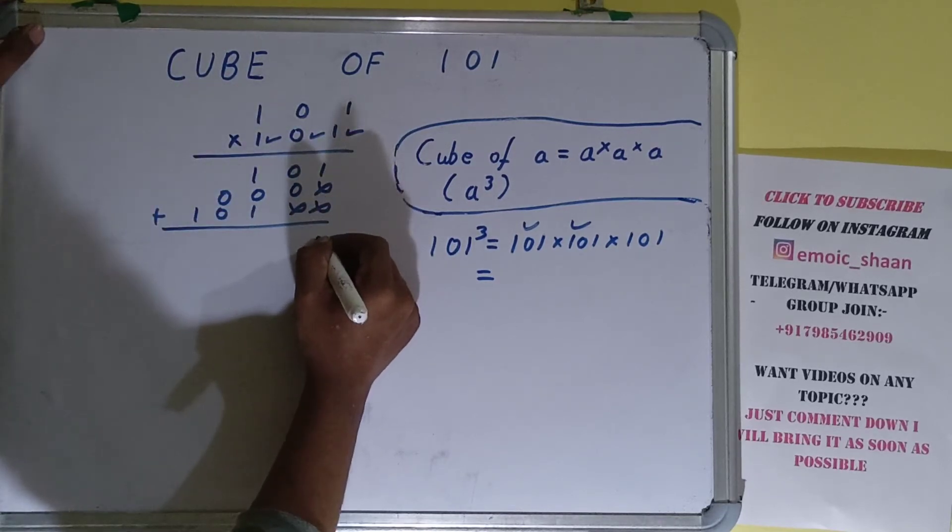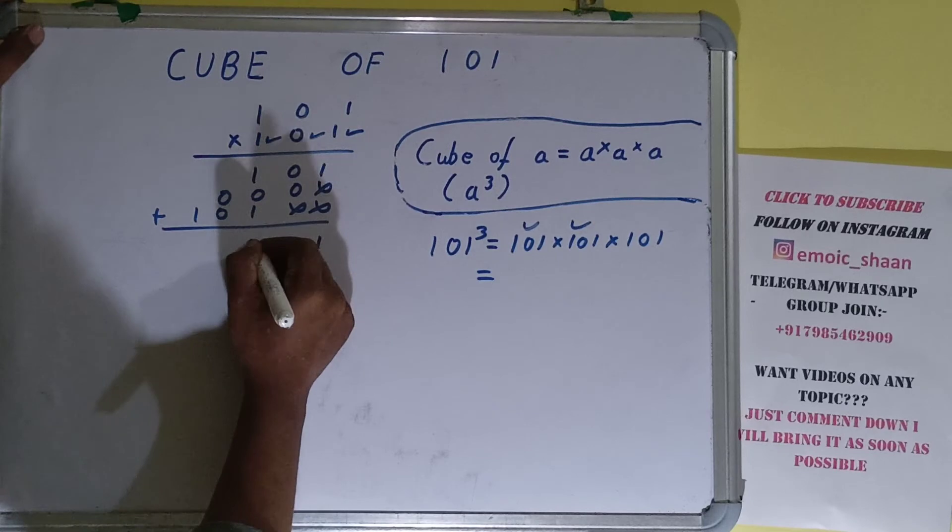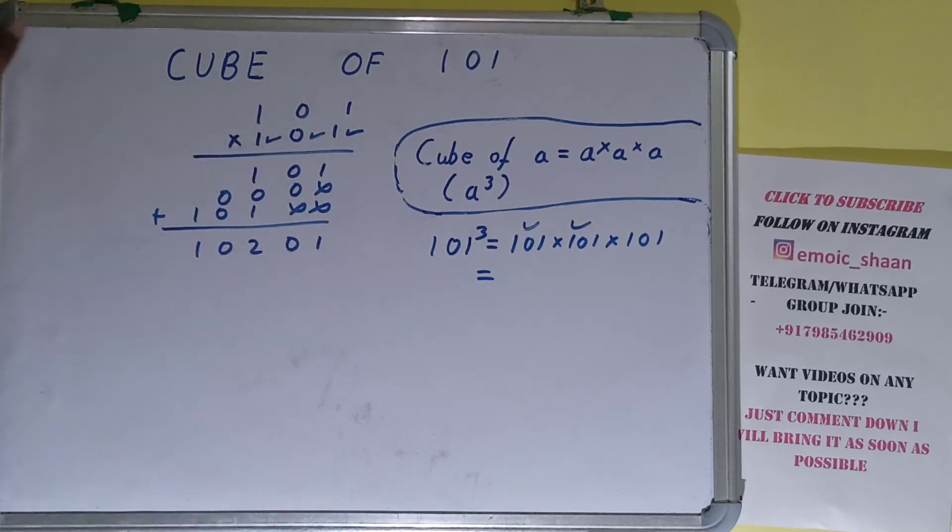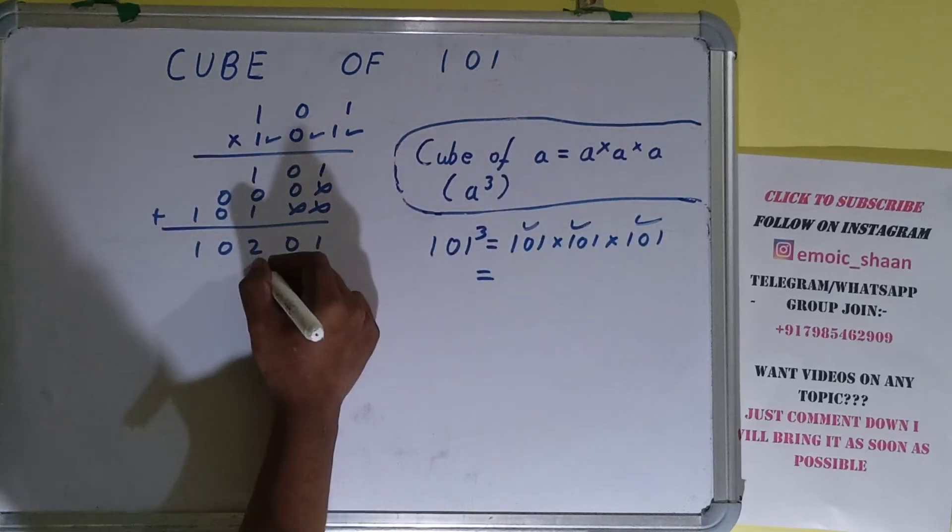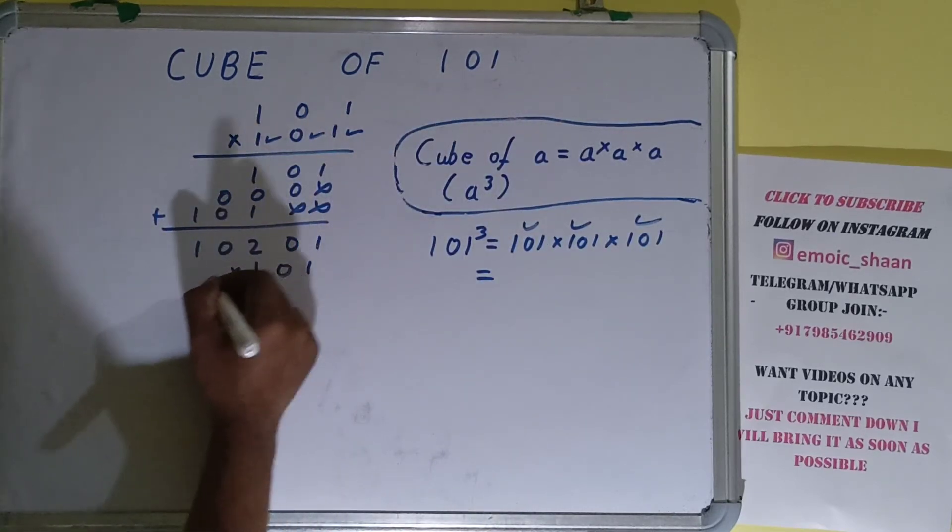Just add all, this will be 1, this will be 0, this will be 2, this will be 0, and this will be 1. With this answer we'll multiply the third term that is 101. Now again we have zero and one only so we can use the same trick.